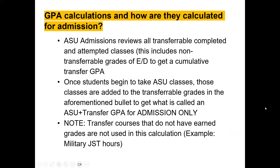Admission criteria. GPA calculations: how are they calculated for admission? ASU admissions reviews all transferable, completed, and attempted classes. This includes non-transferable grades of E (which some call an F) and D, to get a cumulative transfer GPA. Once students begin taking classes at ASU, those ASU classes are also added into that cumulative score with all transferable credits to get what we call an ASU plus transfer GPA, and this is for admission to the major only.